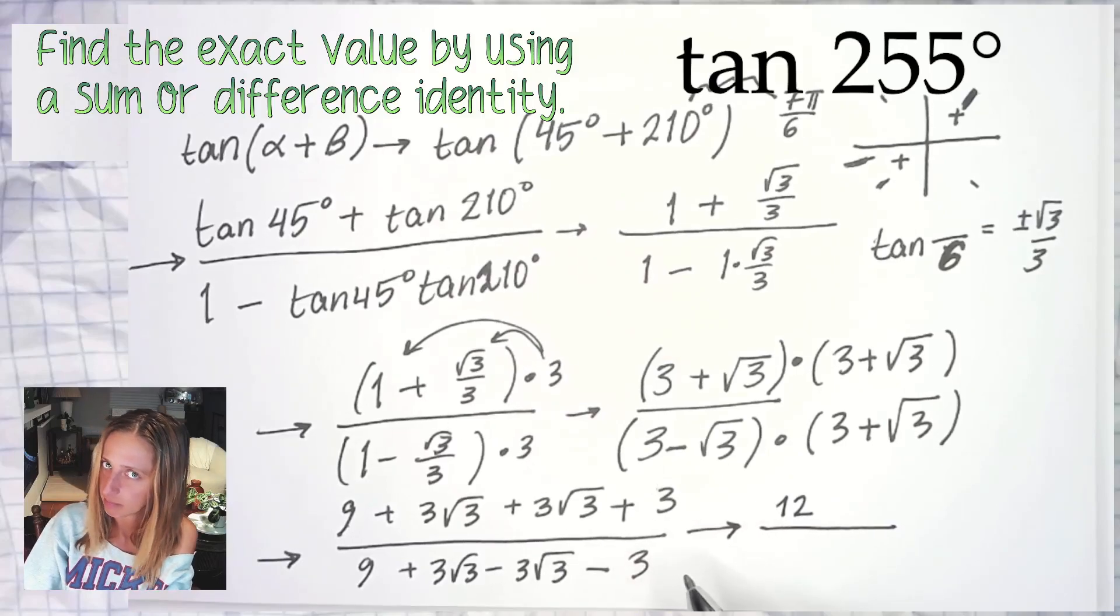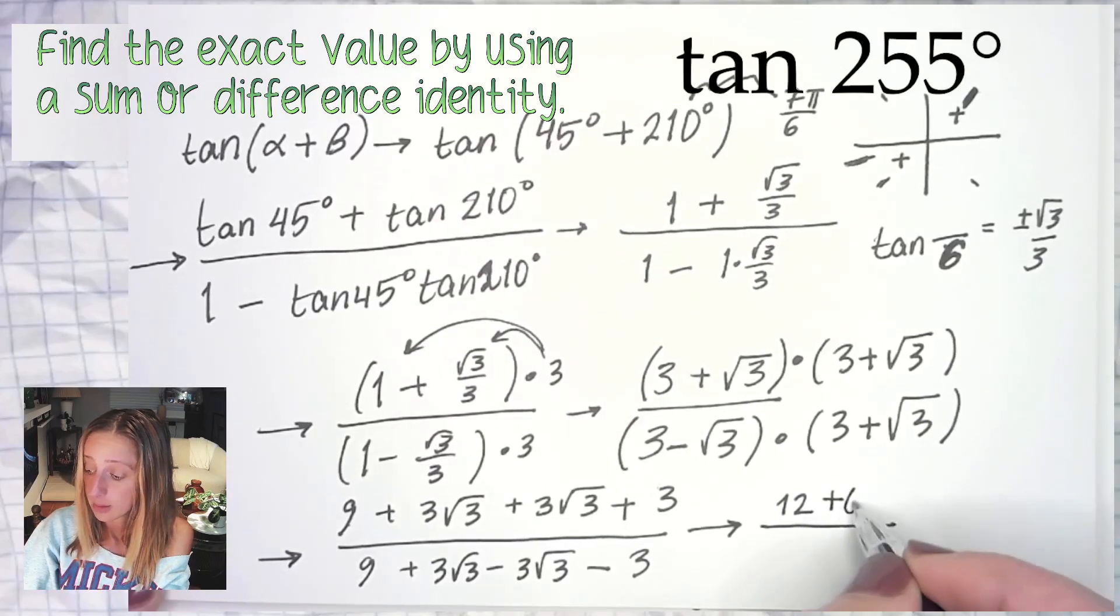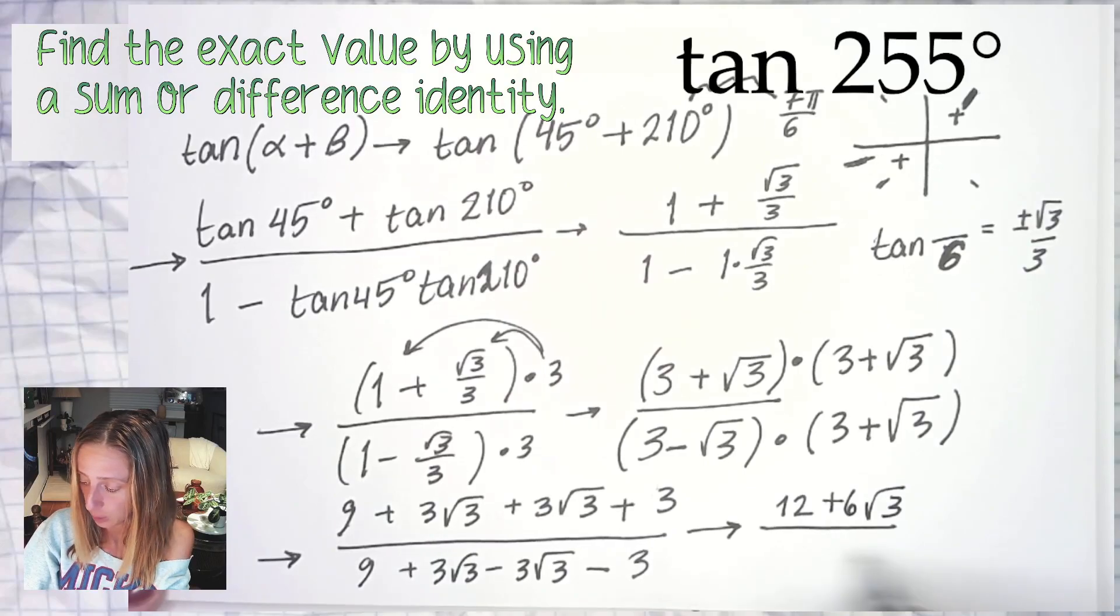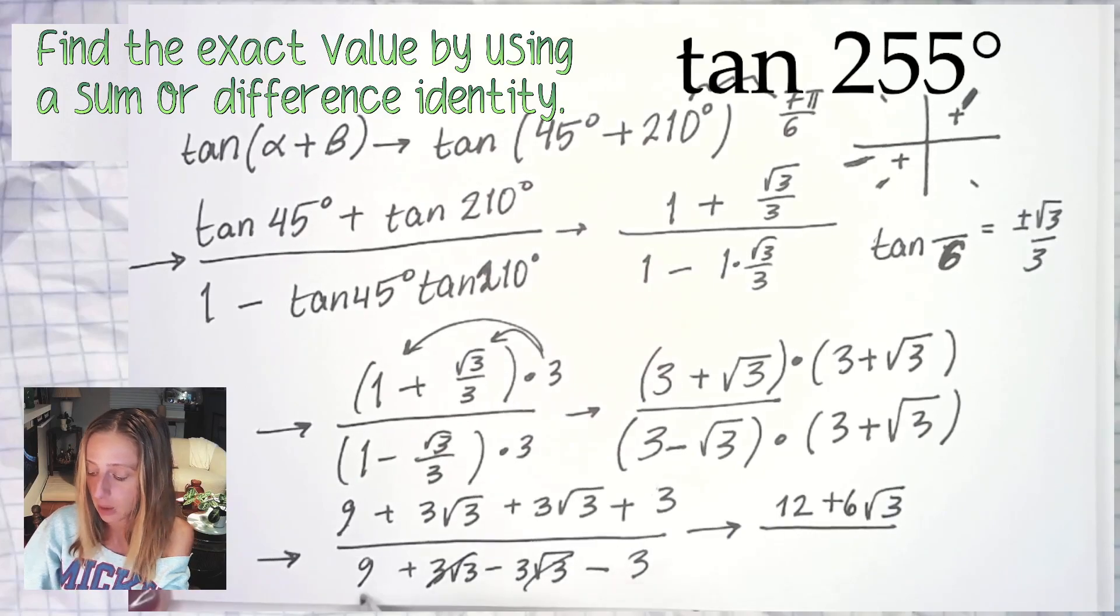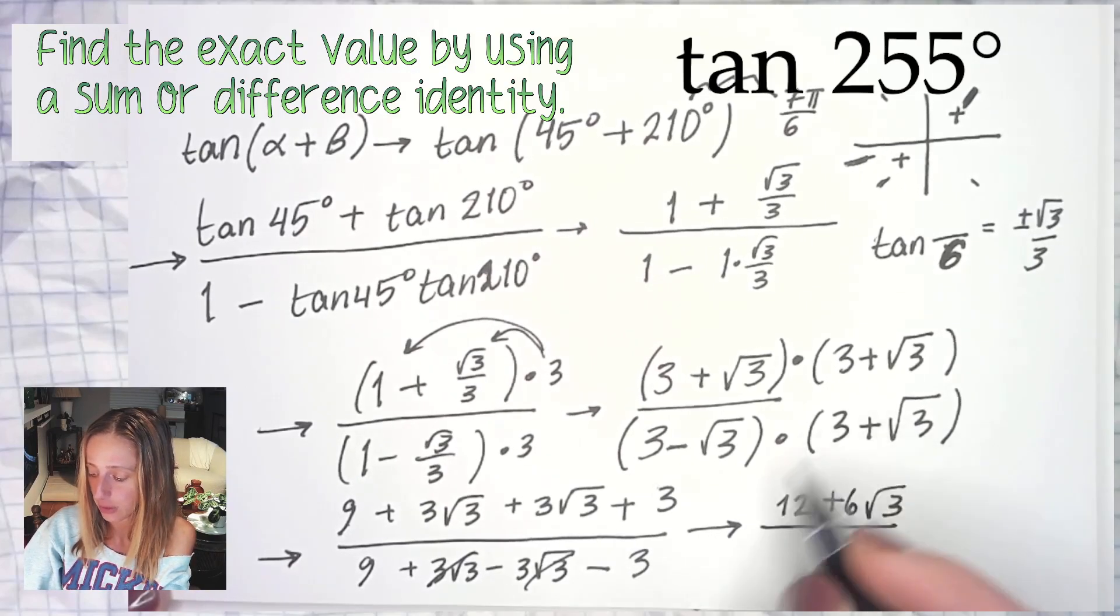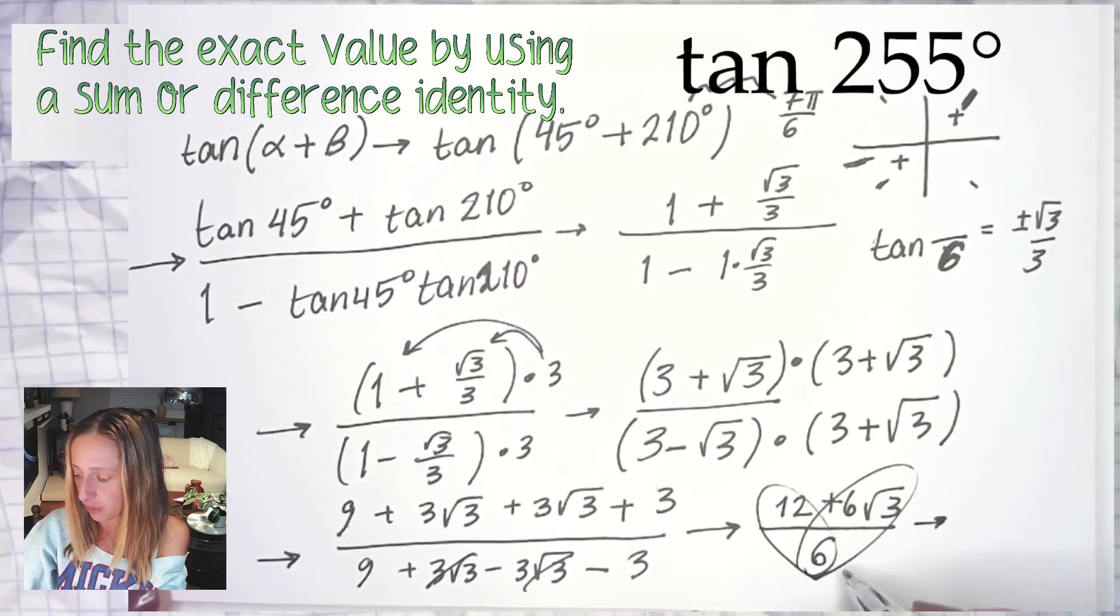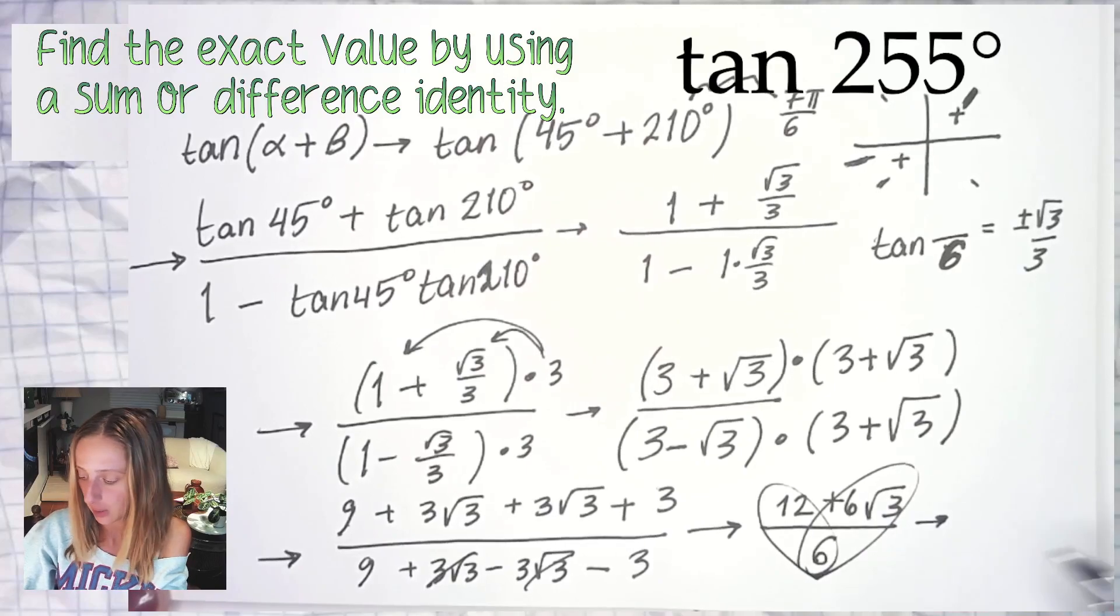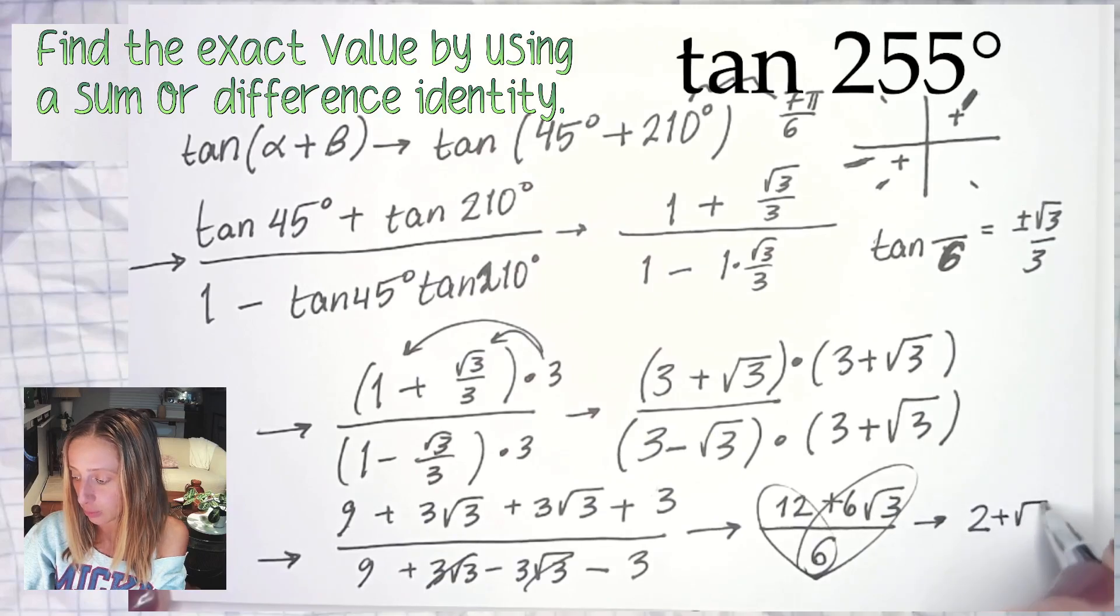On top I'm going to combine like terms. 9 and 3 is 12. 3√3 plus 3√3 is—try, because some of you are thinking the wrong thing—6√3. We're just counting √3s. You had 3 of them, got 3 more, now we have 6. Those are opposites, they cancel out. 9 minus 3, we go with the sign in front of the number, is 6. And we're going to use a little pretzel action to simplify. The thing under the radical does not get simplified. 12 over 6 is 2, 6√3 over 6 is just √3, and there you have it.